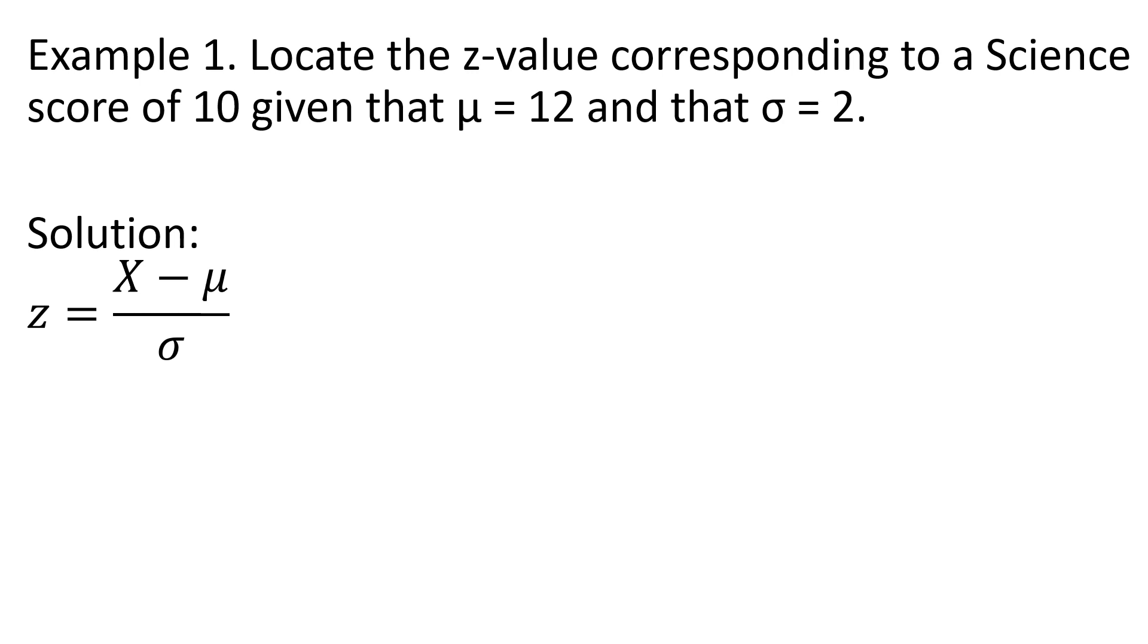Z is equal to the score x minus the population mean over the population standard deviation. By substitution, we have Z equals 10, that's the given score, the value for x, and then the population mean is 12 from the problem, and the population standard deviation is 2.